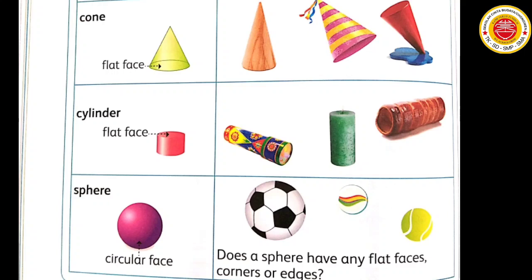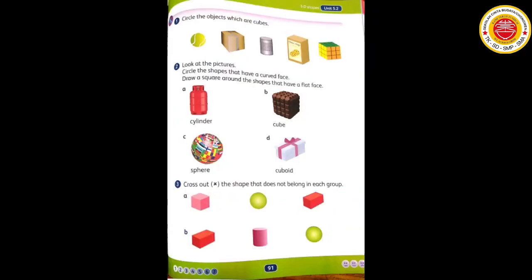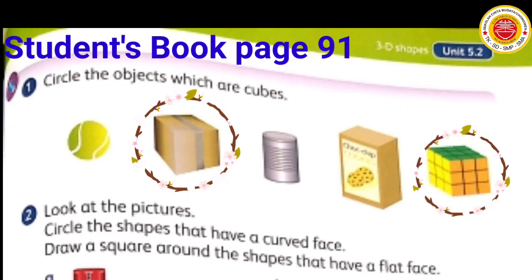Does a sphere have any flat face, corner, or edges? Jawabannya adalah no, it doesn't. Now we continue to page 91. Number one: Circle the objects which are cubes. Kamu perhatikan di sana ada gambar bola tenis, kotak paket, kaleng, kotak choco chip, dan kubus rubik. Yang mana yang berbentuk kubus? Jawabannya kotak paket dan kubus rubik. Kalian lingkari ya jawabannya yang benar.